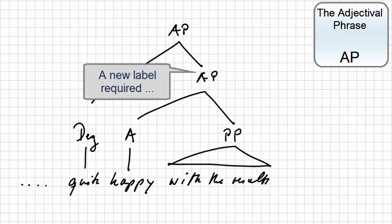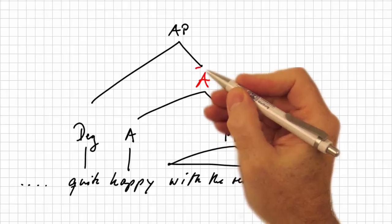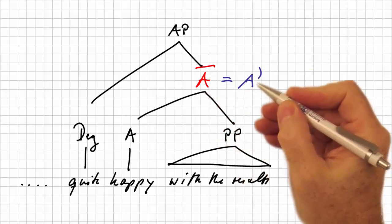So how shall we call the intermediate constituent? The suggestion made by Noam Chomsky in 1970 was a bar. Today, more conveniently spelled as A with an apostrophe.